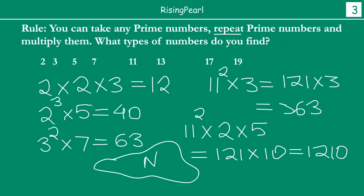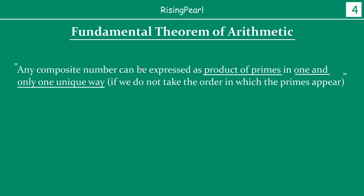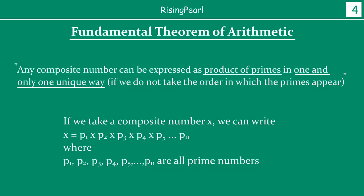Friends, this is very unique, because this is what is called the fundamental theorem of arithmetic. What it officially states is: any composite number — remember, natural numbers consist of the special number 1, then prime numbers, and composite numbers — any composite number can be expressed as a product of primes in one and only one unique way, disregarding the order in which the primes appear. In other words, any composite number x can be written as p1 times p2 times p3 times ... times pn, where all of them are prime numbers.